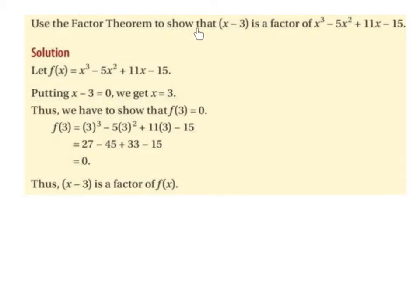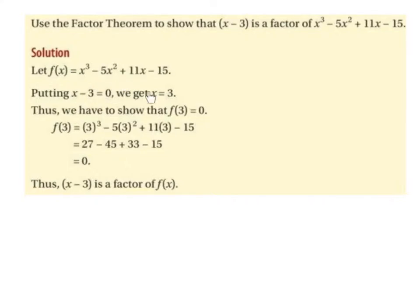Use the factor theorem to show that x minus 3 is a factor of x cubed minus 5x squared plus 11x minus 15. So we're going to let f of x equal x cubed minus 5x squared plus 11x minus 15. Then we let x minus 3 equal to 0, which gives x equal to plus 3. Thus, we have to show that f of 3 is equal to 0.